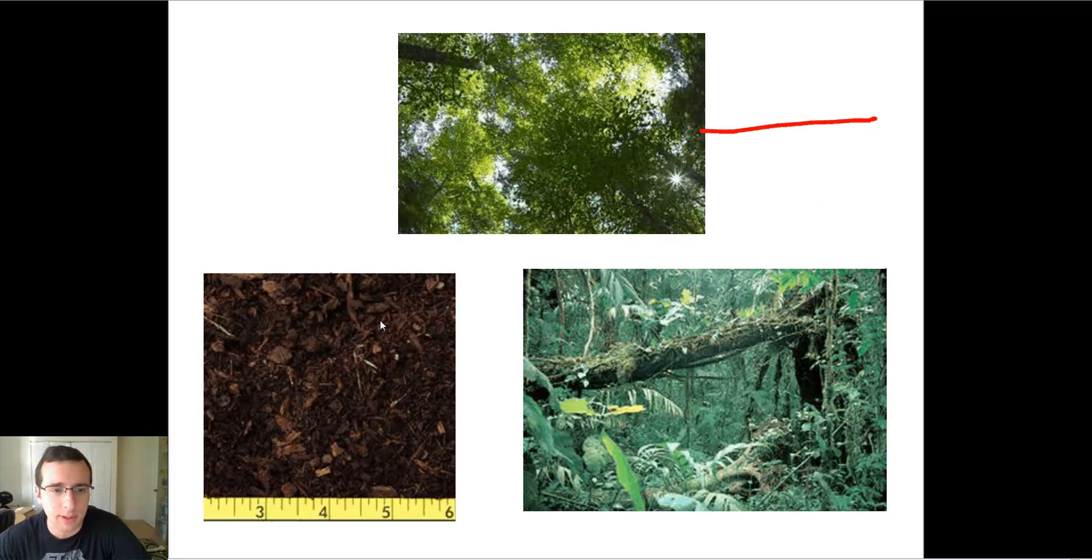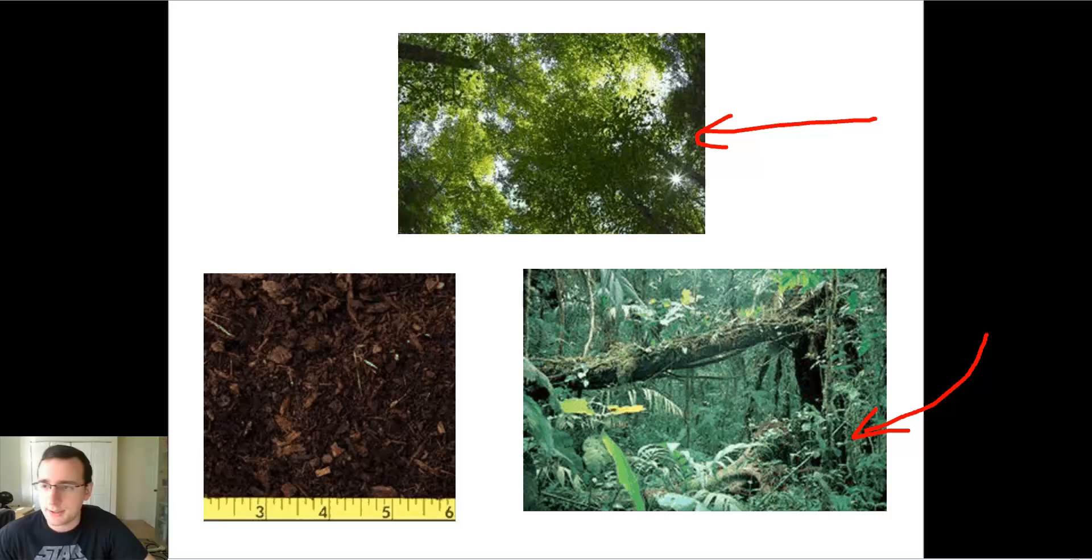The first one is the canopy. A canopy is basically what you see in this picture. Somebody is sitting under the forest taking a picture, looking up, and you see all the trees and leaves. Notice that most of the sunlight is blocked down here from where the picture is being taken. There's going to be a different ecosystem up there where the canopy is, and most of the photosynthesis is being done. Most of the fruits and animals are going to be living there.